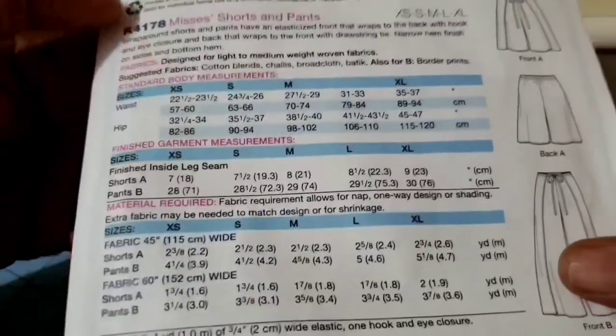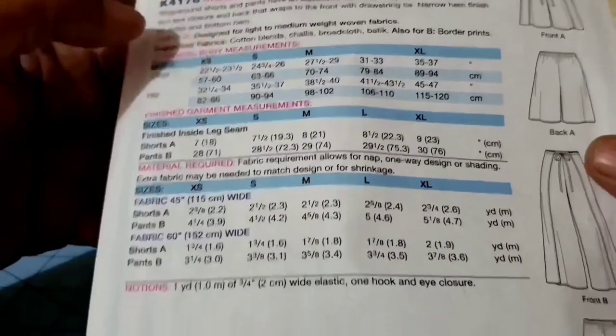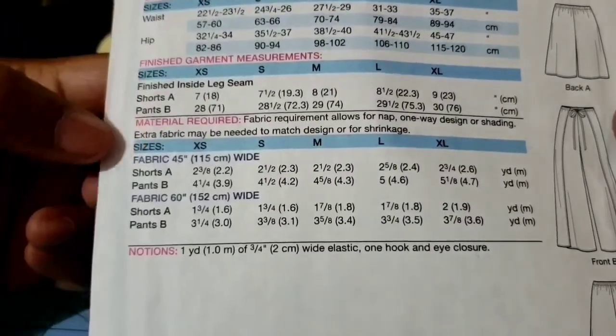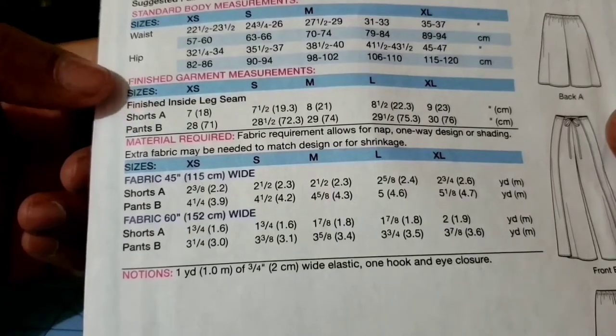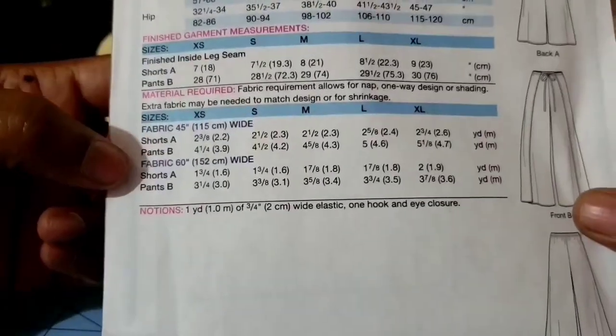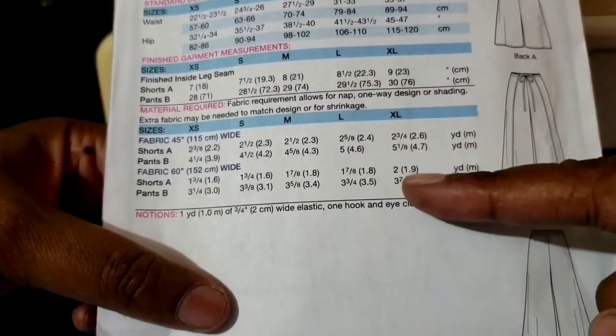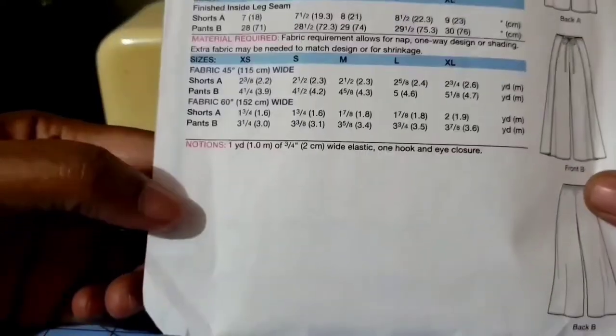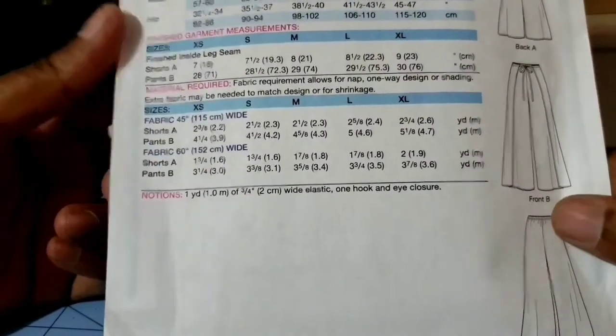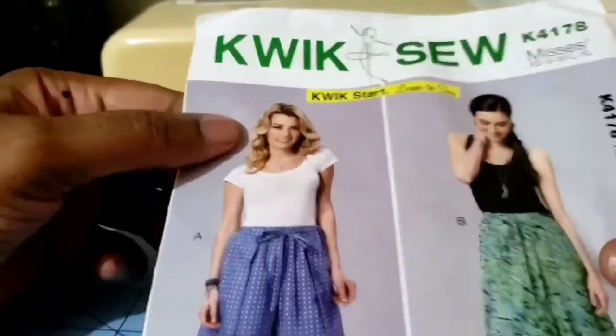The sizes run up to XL. I am a little bit more than that so I'll be doing an adjustment to the actual pattern. There's not much information for the finished garment measurements other than the inside leg seam for the shorts. In terms of the material required for shorts A, I'm above XL so a little over two yards for me. The notions would need the elastic which is a three-quarter inch elastic and the hook and eye closure.